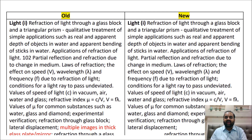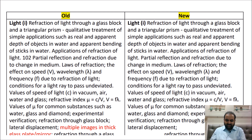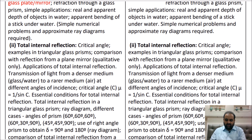Now we come to the Light section, which has three chapters: Refraction of Light through Plane Surfaces, Refraction through Lenses, and Spectrum. In the first chapter, Refraction of Light through Plane Surfaces, the very last part 4.7 — multiple images in a thick glass plate or thick mirror — is a small part that has been removed.